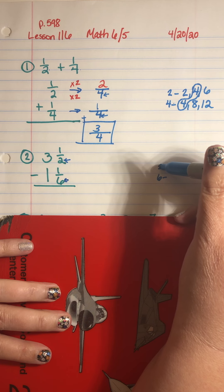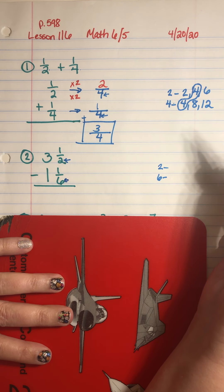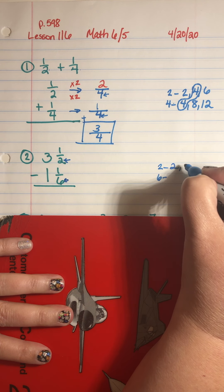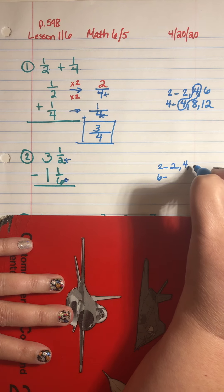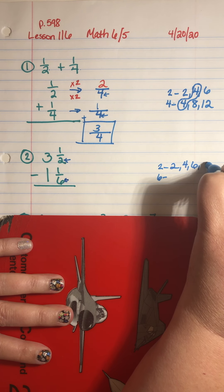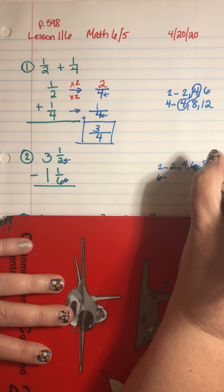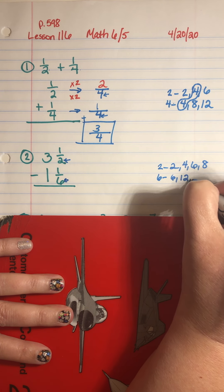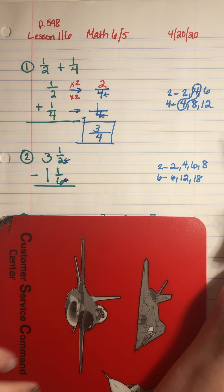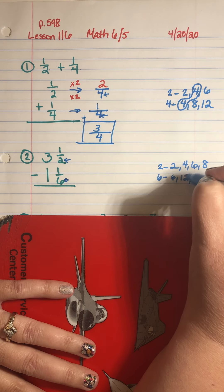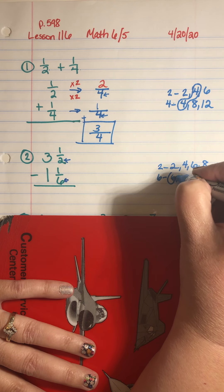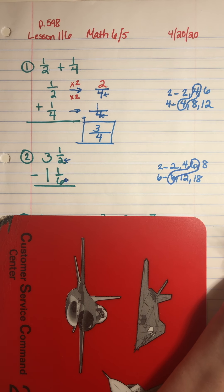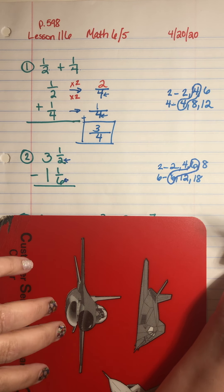So I'm going to multiply by my counting numbers. Two times one is two, two times two is four, two times three is six, two times four is eight — and I'm going to stop there since I already got a six. Six times one is six, six times two is twelve, six times three is eighteen. So I look through and find that the smallest one they have in common is six.